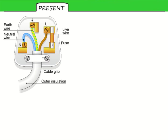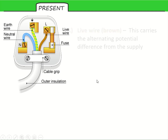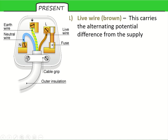So what does each part do? There are three key parts. The brown wire on the right is the live, and it carries that alternating potential difference from the supply to your device. The neutral wire completes the circuit — without the neutral there's nowhere for current to go. The live is dangerous whether your switch is on or not.